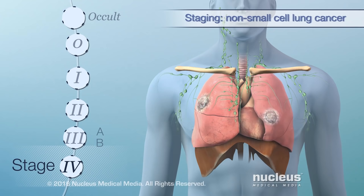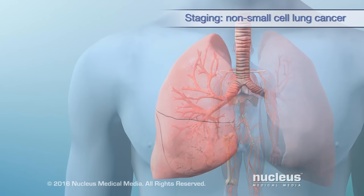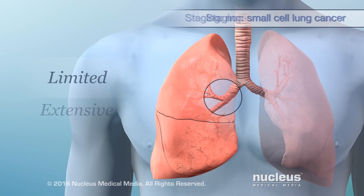There are fewer stages for small cell lung cancer. In its limited stage, cancer is found in one side of the chest only. In the extensive stage, cancer has spread to the other side of the chest or to distant organs.